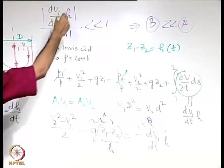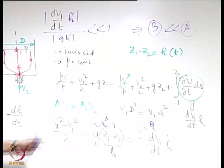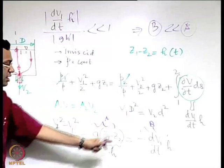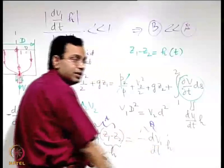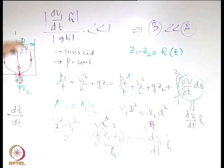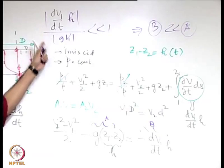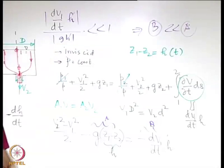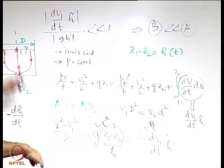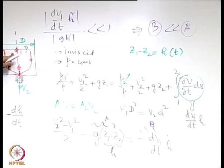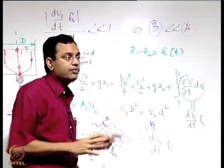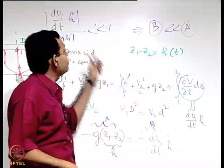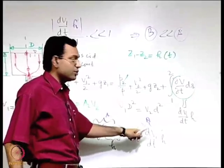Since h appears in both term a and term b, the comparison reduces to comparing dv/dt with g — the rate of change of free surface velocity versus gravitational acceleration. If the acceleration of the free surface is comparable with g, you cannot drop the unsteady term; you must retain it, and then the differential equation cannot be solved analytically. But for most practical cases, this acceleration is much smaller than g, so it is possible to drop the term.